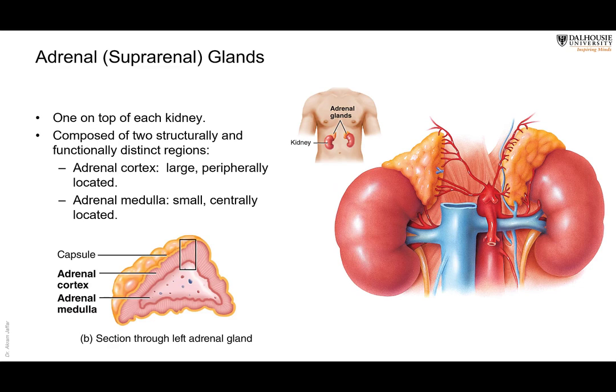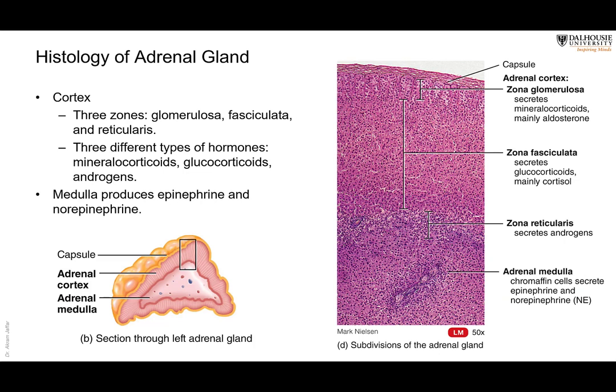The other gland is the adrenal or suprarenal gland. As the name indicates, it is close to the kidney. There are two glands, one on either side, on top of each kidney. They are actually composed of cortex and medulla, which are totally different from each other — structurally, functionally, and embryologically different. The adrenal cortex is at the periphery and is the large part of the gland, while the smaller medulla is in the center.